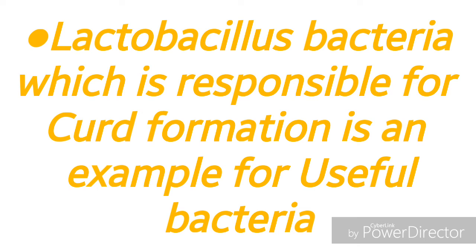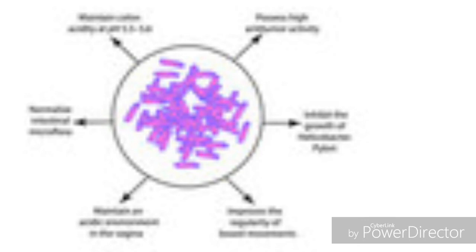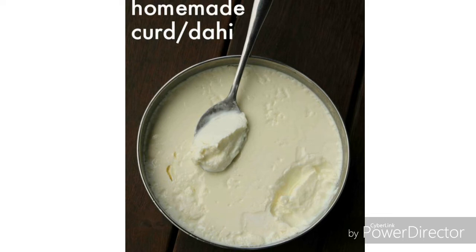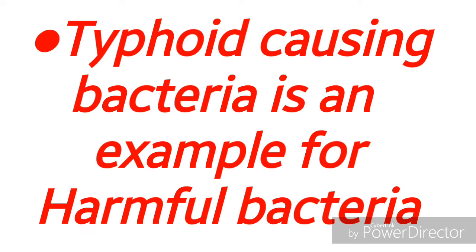Now let us see an example of useful bacteria. Lactobacillus bacteria is responsible for the formation of curd. This Lactobacillus bacteria performs fermentation, which is a biochemical process, and it turns milk into curd. If you add one or two teaspoons of buttermilk or curd to boiled milk and leave it undisturbed overnight, the milk converts into curd — a semi-solid structure.